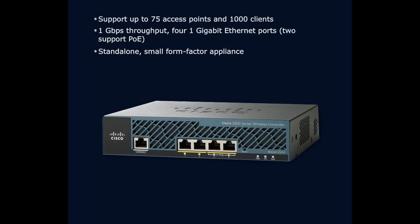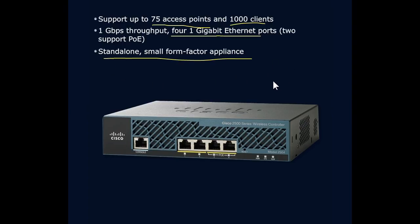At one level, we see the 2500 with our centralized configuration — our base level. Base level supports 75 access points and 1,000 clients — not bad. One gigabit per second throughput with four one-gigabit Ethernet ports, a couple supporting Power over Ethernet. It's a standalone small form factor appliance, very straightforward to use. It's not rack-mounted; just designed to sit there as a small operational box, giving you a central point of management.